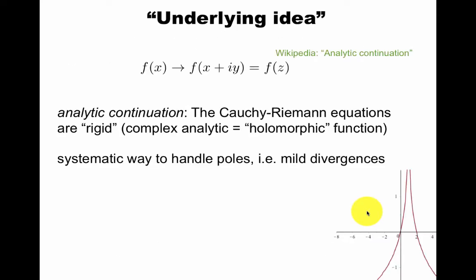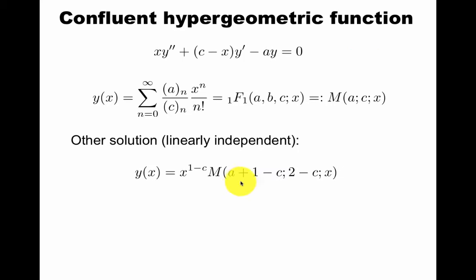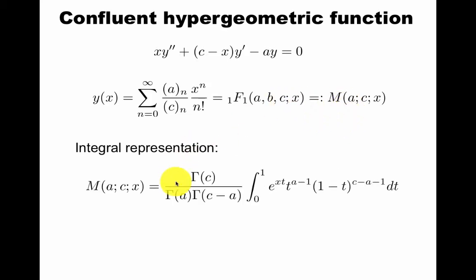We had a lot of examples now. Equally important is that hypergeometric function provides unified description of a lot of different things. The underlying idea is analytic continuation. Riemann said let's consider f of z, but the Cauchy-Riemann equations are very rigid. It's a systematic way to handle poles like we saw. So we can go another step and let two of the singularities flow together.